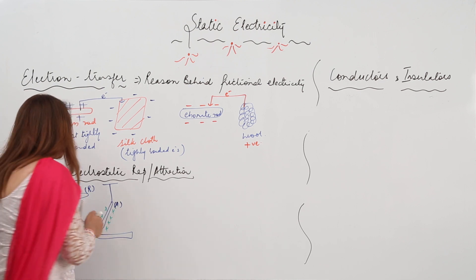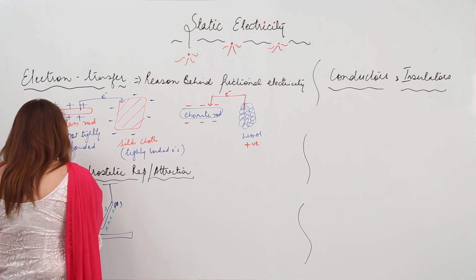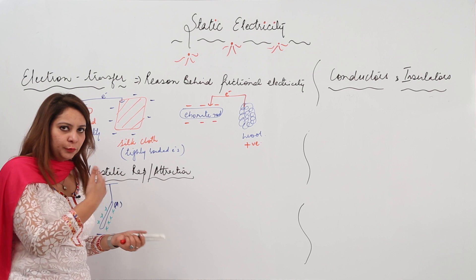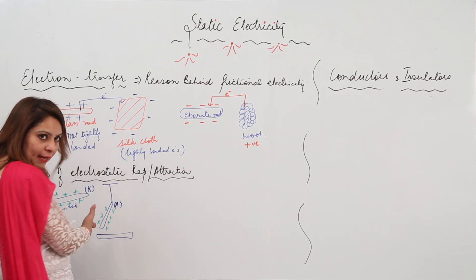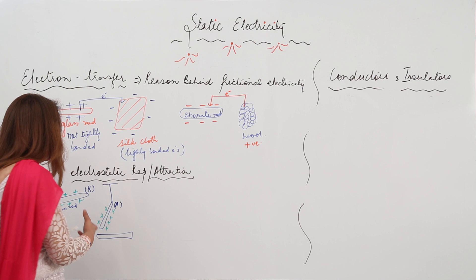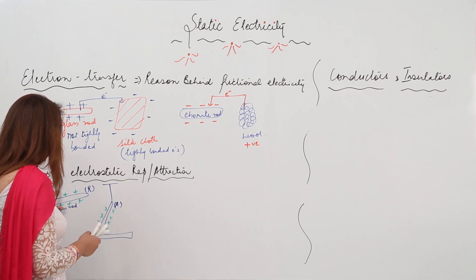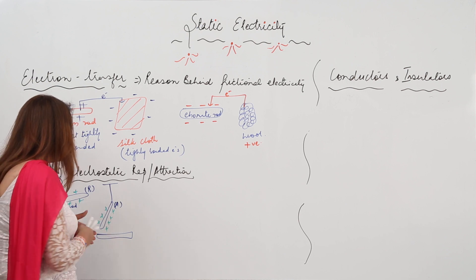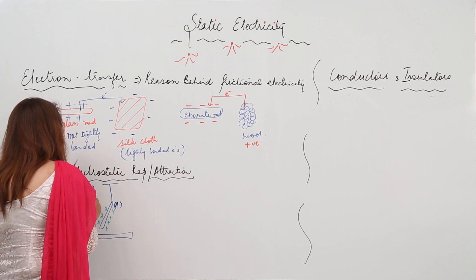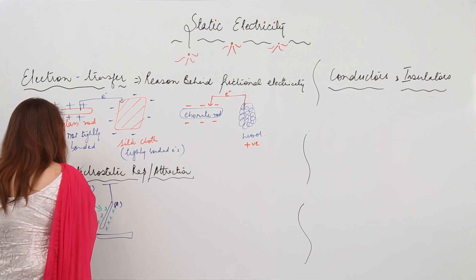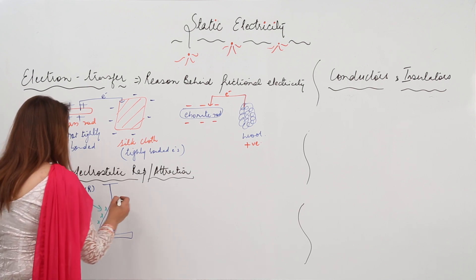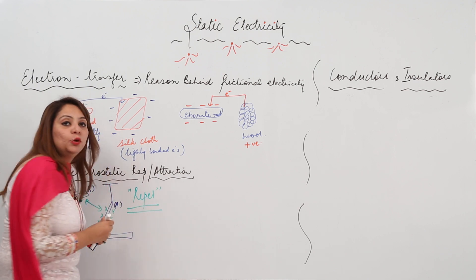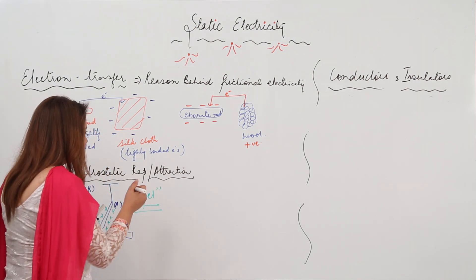When glass rod B is rubbed with silk, the electron transfer occurs from glass rod to silk, so it also acquires a positive charge. When I try to bring this glass rod towards the suspended glass rod, we see that they repel each other — they start moving away, moving far apart. That means they repel each other because they both have the same charge.